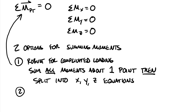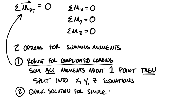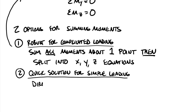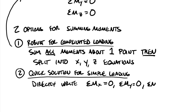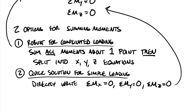The second option works well for systems that are easier to get your head around — a quick solution for simple loading. If you only have a handful of moments and most are coming from one-dimensional R vectors and force vectors, it might be easy enough to look at your free body diagram and figure out what your moments are around your three axes. In this case, you would directly write sum moment about x equals zero, sum moment about y equals zero, and sum moment about z equals zero.